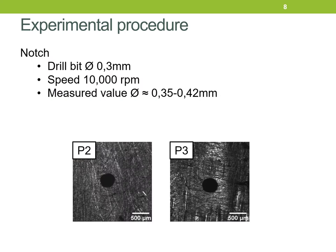To generate the crack at the focus point, a hole is drilled that acts as a stress concentrator, using a drill bit of 0.3 mm diameter. The hole manufactured was slightly bigger, around 0.35 to 0.42 mm. This was the case for sample number 2 and sample number 3.